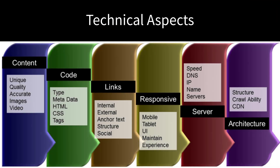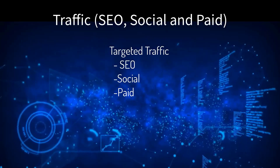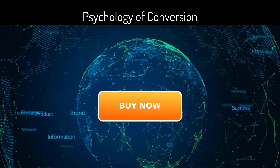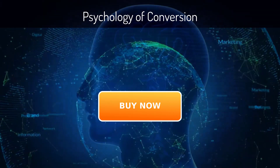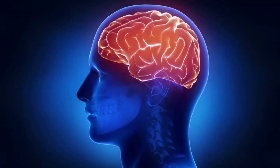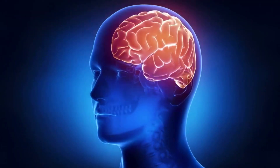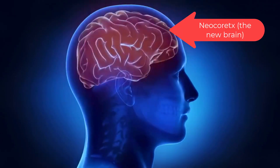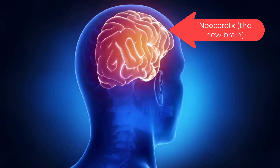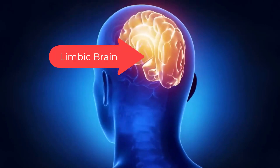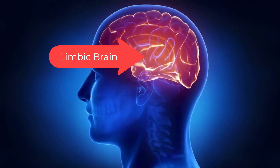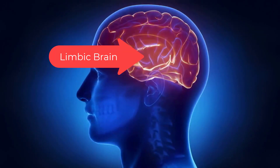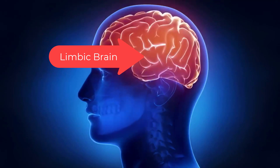All online marketing must have three elements in alignment: the technical aspects — servers, layout, code structure; the traffic — SEO, social, and paid; and the psychology of conversions. Your brain has three basic layers and only one real decision maker. The neocortex thinks and processes rational data. The middle brain, the limbic brain, feels emotions and governs our instinct for fight or flight.